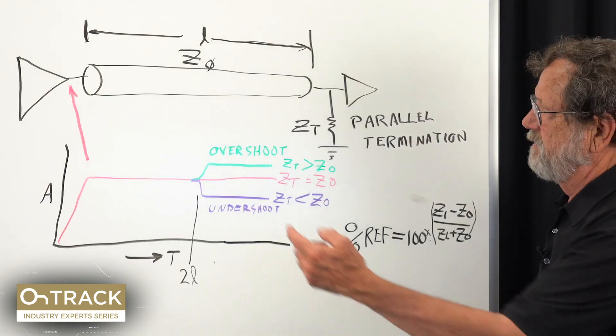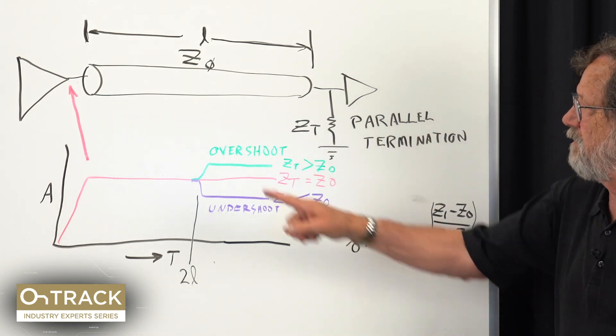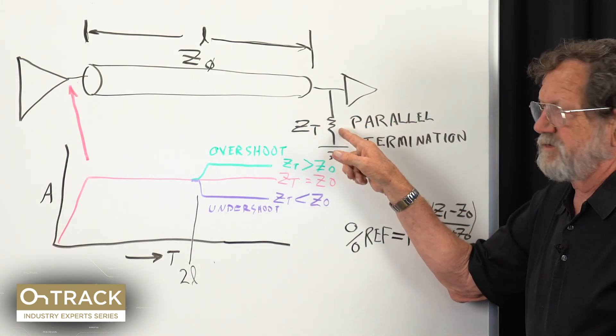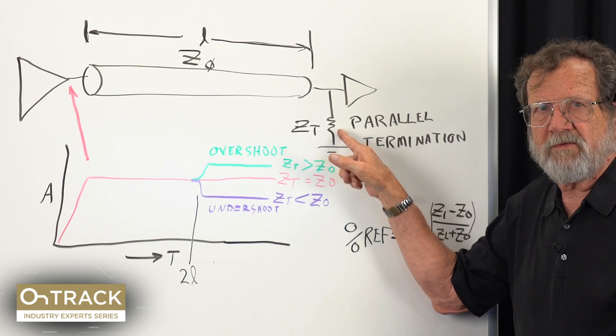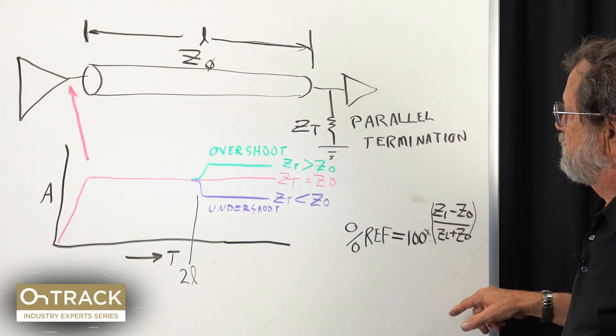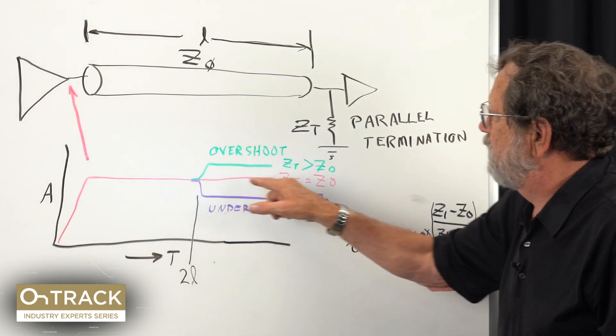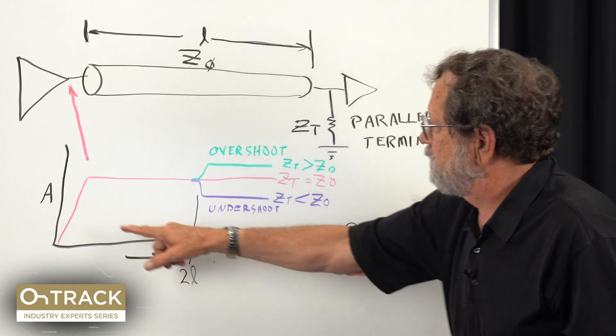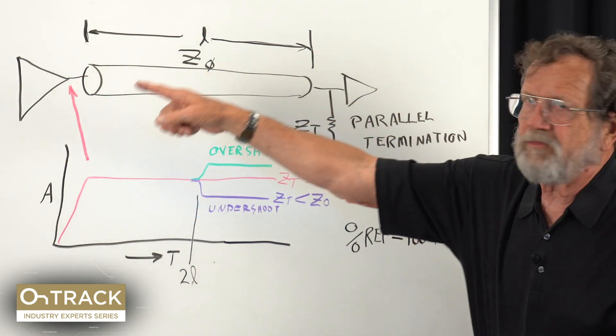When you do that, the energy that you sent down the line to deliver a voltage waveform to this input—all the energy is removed from the network and no reflections happen. That condition is the red line I have here where I'm observing the waveform at this output. As you can see, nothing comes back the other way.